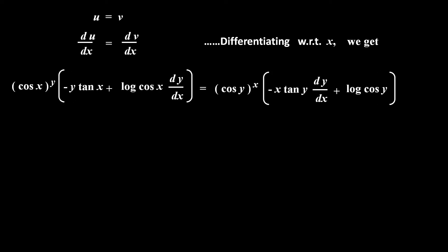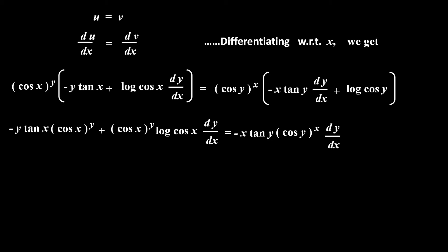We already used the statement u is equal to v. So, differentiating both sides with respect to x, we get du by dx is equal to dv by dx. Therefore, substituting the values of du by dx and dv by dx, we get this statement. Solving the bracket on the right-hand side, we get: minus y into tan x into cos x raised to y, plus cos x raised to y into log of cos x into dy by dx, equals minus x into tan y into cos y raised to x into dy by dx, plus cos y raised to x into log of cos y.